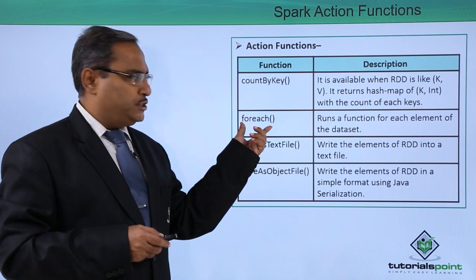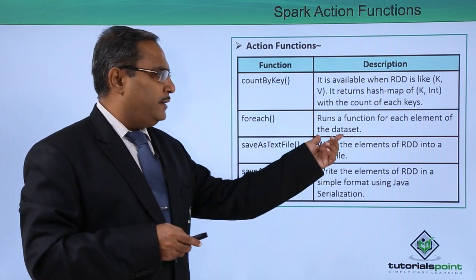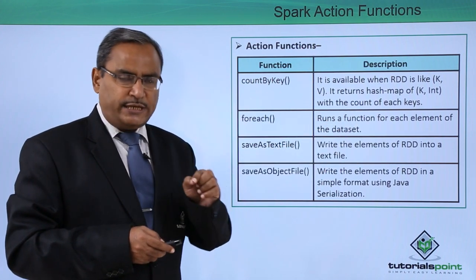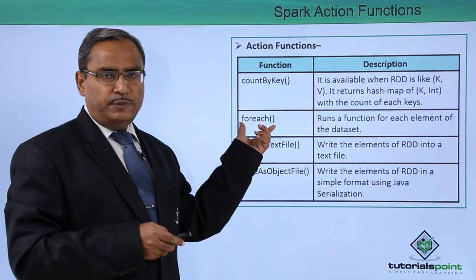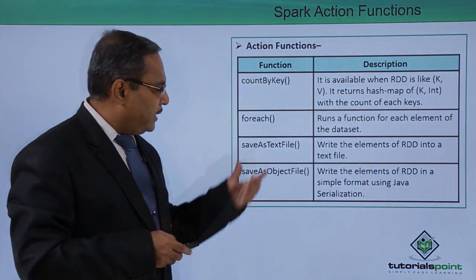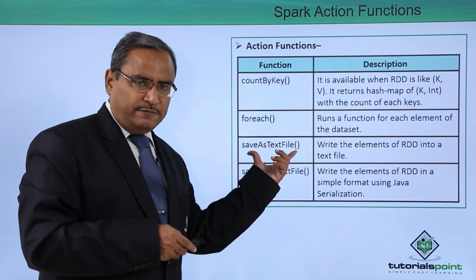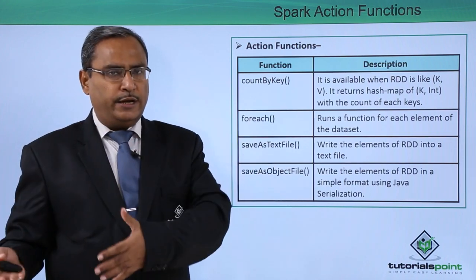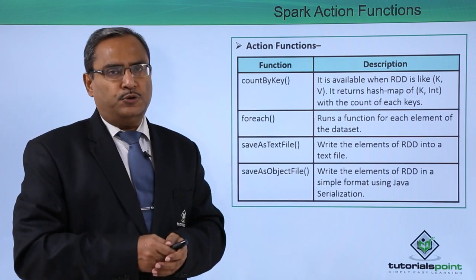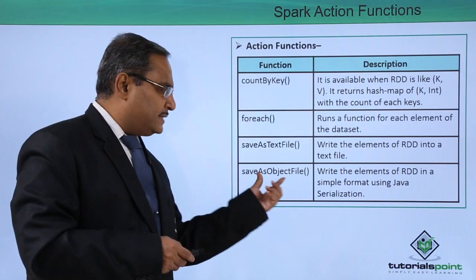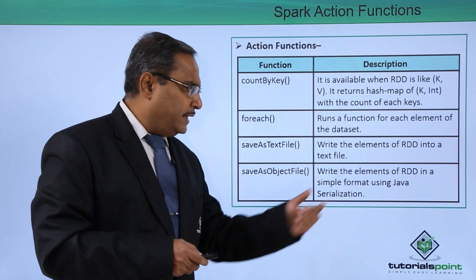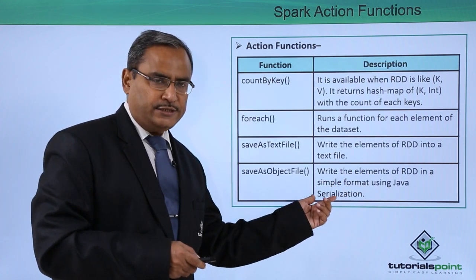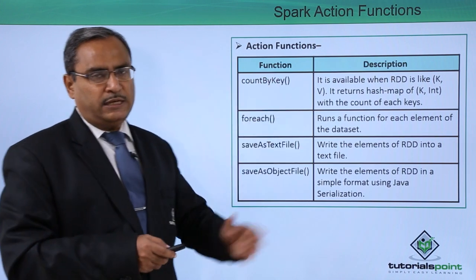The forEach function applies a function for each element of the dataset — that is the purpose of the forEach function. Next, saveAsTextFile writes the elements of the RDD into a text file, so the elements will be written to a non-RDD output that is a text file. Finally, saveAsObjectFile writes the elements of the RDD in a simple format using Java serialization. Here we have the function names and their respective descriptions.